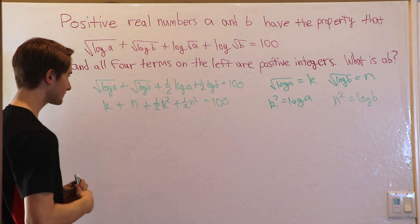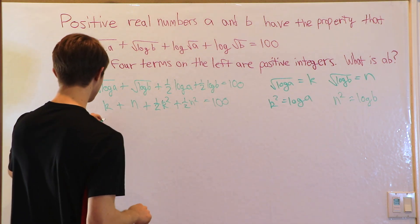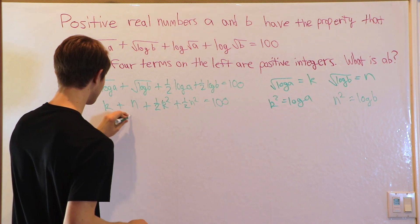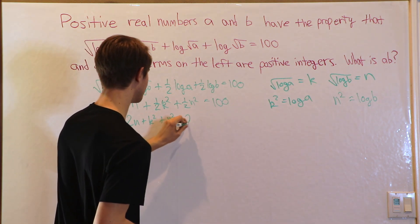Now, this one-half is kind of annoying, so let's multiply everything by two. So we have 2K plus 2N plus K squared plus N squared equals 200.